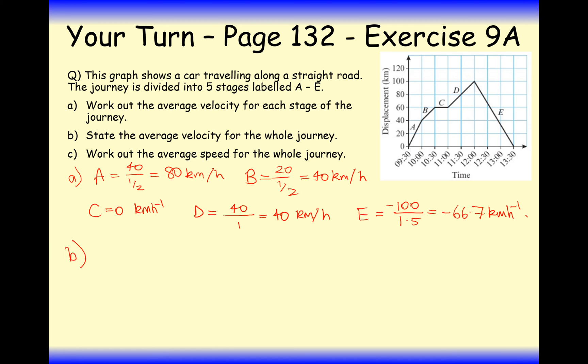Part B, state the average velocity for the whole journey. That's zero, because for the whole journey we've started and finished at exactly the same point. So the average velocity is zero.